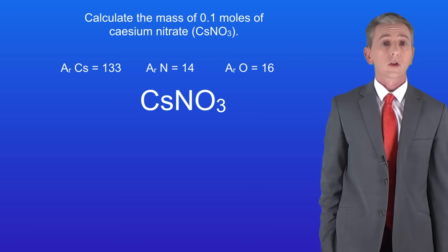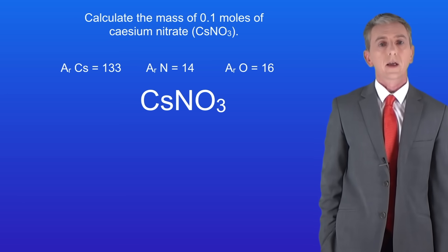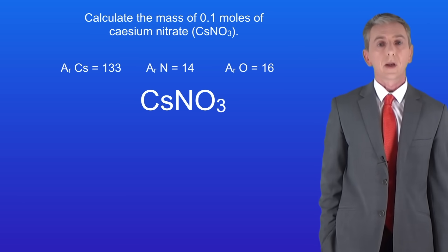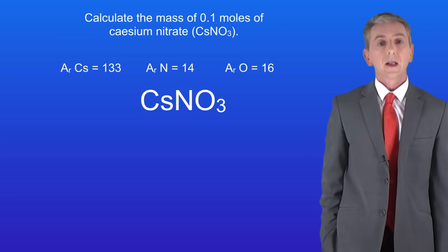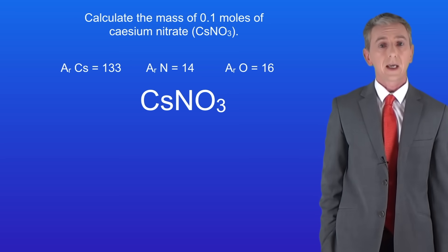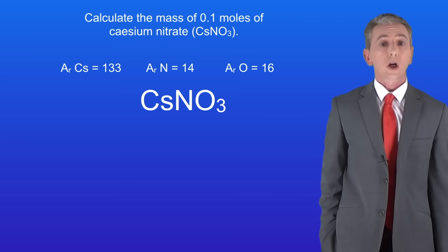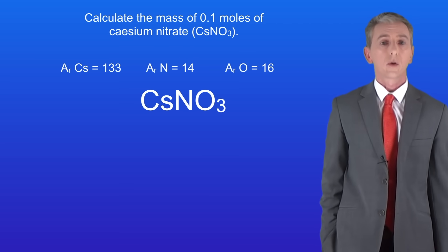Here's another question for you to try: calculate the mass of 0.1 moles of caesium nitrate. Caesium nitrate has the formula CsNO₃. I've given you the relative atomic masses that you need, so pause the video now and try this yourself.